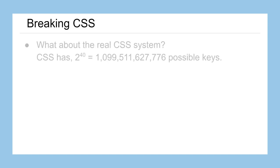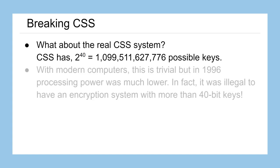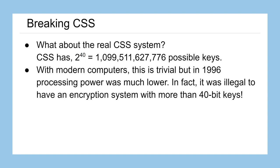So let's take a look at breaking real CSS. The 40-bit seed that we talked about earlier gives us about a trillion or so possible keys. That's a lot. In fact, with modern computers it's pretty trivial, but when this was being used in the mid-90s the processing powers on our computers were much lower. In fact, the processing power was low enough that the government decided it would be illegal to have an encryption scheme with any more than 40-bit keys, because anything more than that and the government wouldn't be able to break them if they had to.